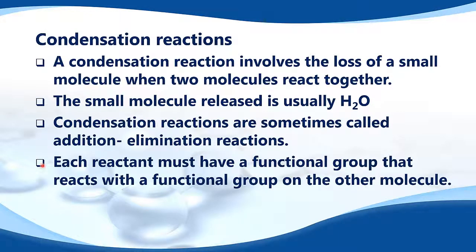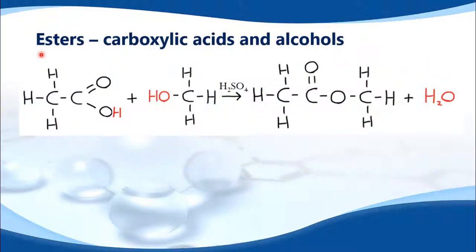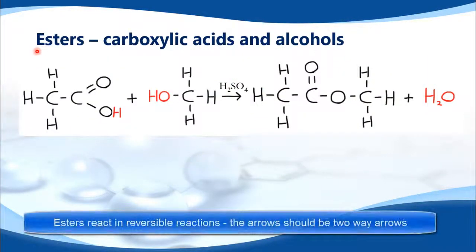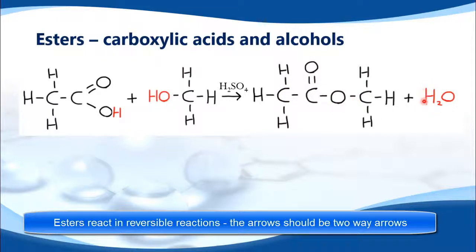Each reactant must have a functional group that reacts with a functional group on the other molecule. Esters are formed from condensation reactions of carboxylic acids and alcohols. Here we have ethanoic acid and methanol with a sulfuric acid catalyst, and we produce an ester. This ester is called methyl ethanoate, and we have a molecule of water.